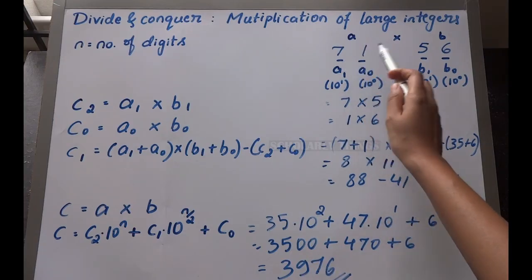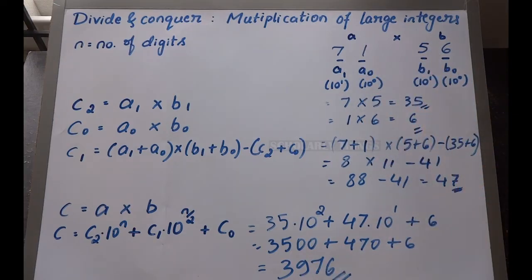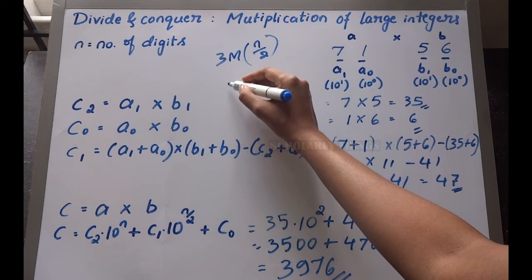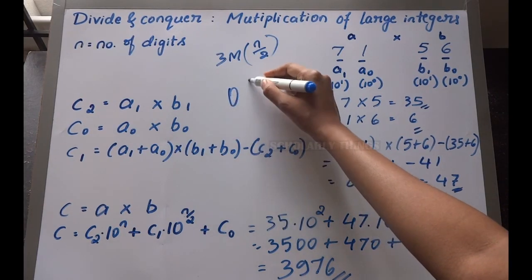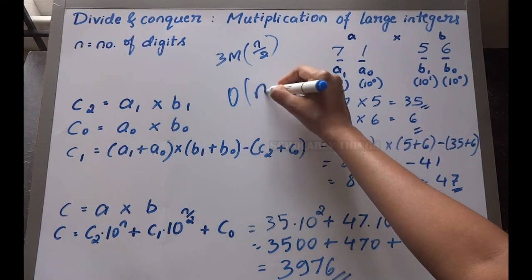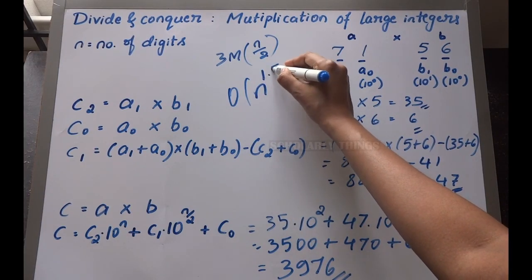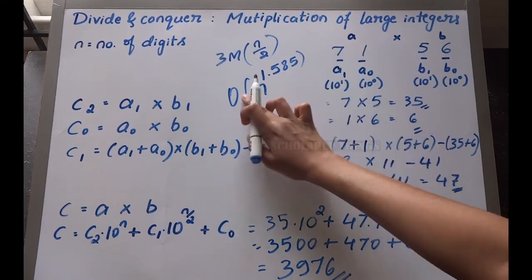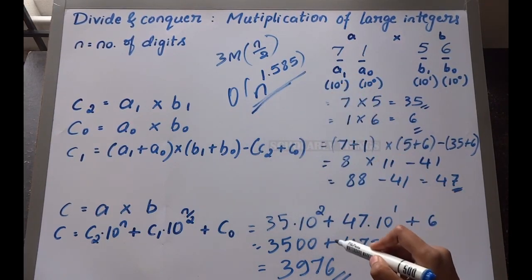Multiplication of n-digit numbers requires three multiplications of n/2 digit numbers. So the time complexity is reduced from n² to n^1.585. This is the time complexity of this algorithm.